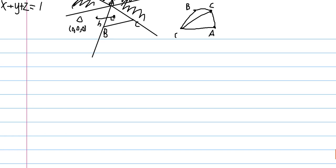From standard 3D geometry, if we have three vectors, they form a parallelepiped — which is sort of like a slanted cube. Just as a square is to a parallelogram, a cube is to a parallelepiped. We know that for three vectors, the volume of this parallelepiped that they span can be compared to another parallelepiped.